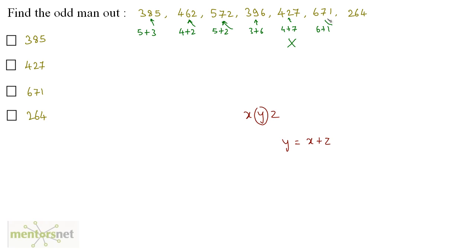6 plus 1 gives you 7. And in the last one, you have 4 plus 2, that's 6, the middle digit. But this number is problematic. So that's the odd man out. And that is option B.